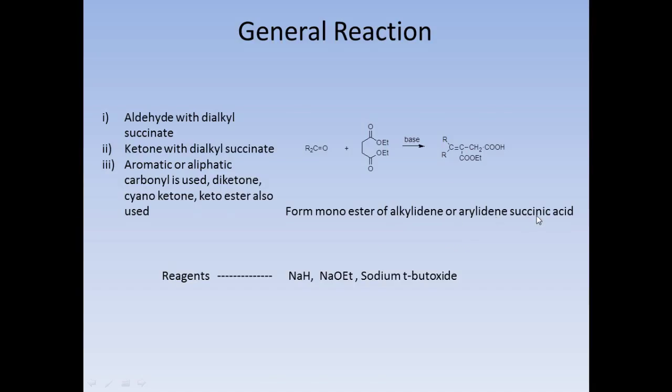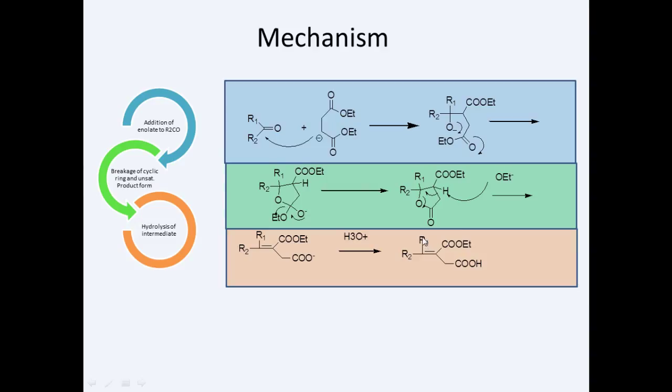Alkylidene succinic acid is the product. First is the attack, then cyclization, then elimination, then hydrolysis. The main steps are formation of lactone plus ester groups and opening of the lactone ring to give the unsaturated ion and hydrolysis.